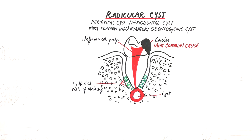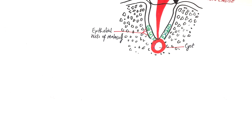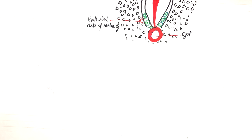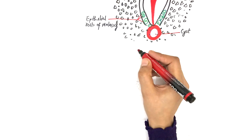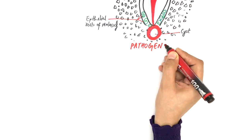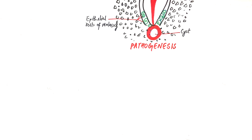As soon as these epithelial rests of Malassez around a tooth apex are stimulated by pulpal inflammation, the cyst origination begins. This origination of the cyst is accomplished in four main stages.